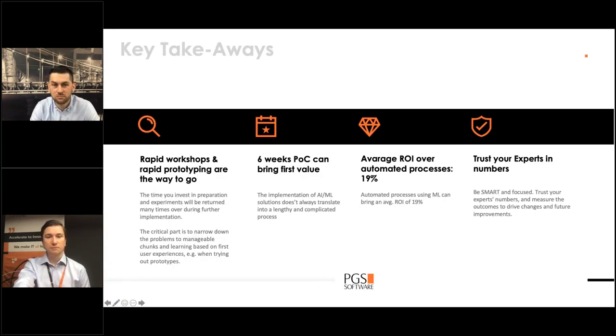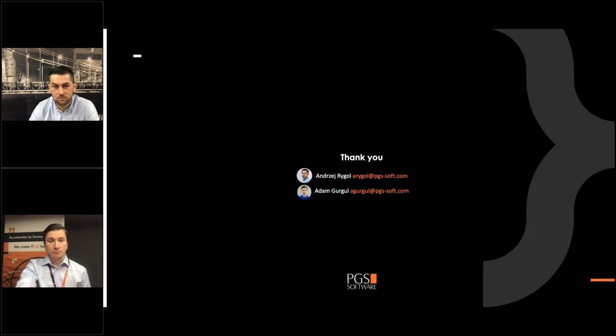Our message is that the rapid workshops and rapid prototyping are the way to go. The first savings in our client's case study happened after six weeks after we started. Six weeks is a period in which the proof of concept can bring first value and can be delivered. Among our customers and our projects, we see that the average ROI over automated processes is approximately 19%. And we encourage you to trust your experts in numbers and try to combine the expertise of your engineers, of your employees and combine it with the state-of-the-art science, which is now happening. Thank you for your attention.